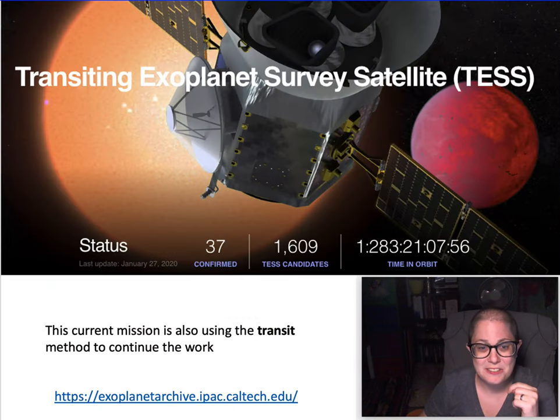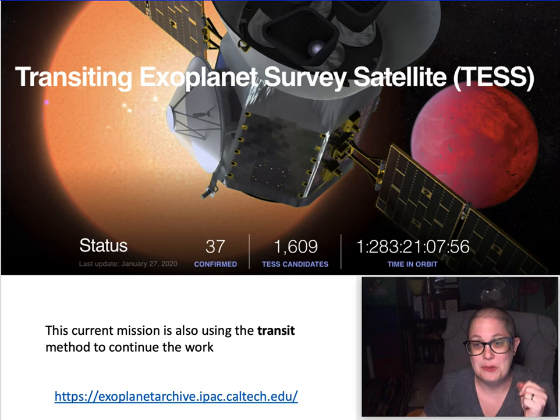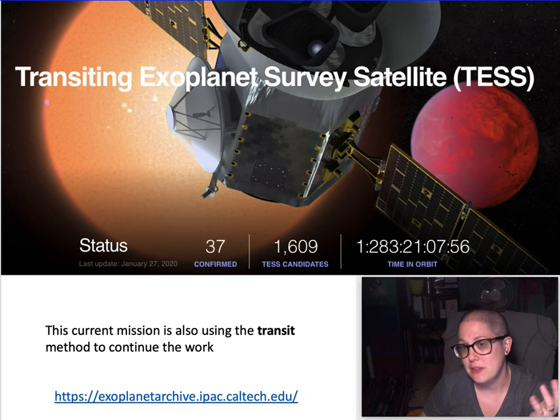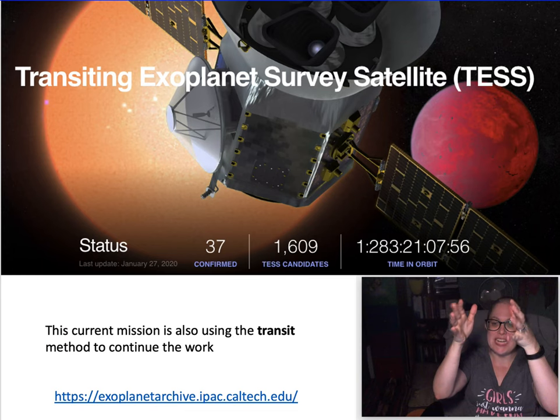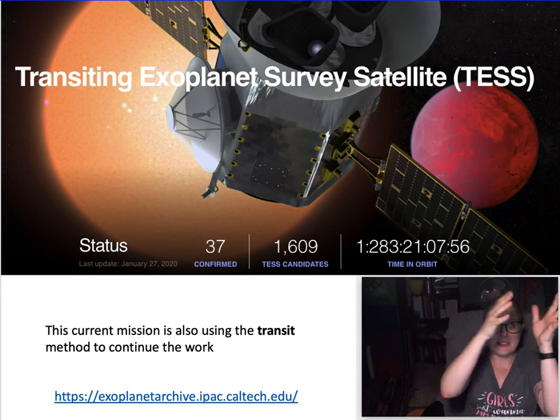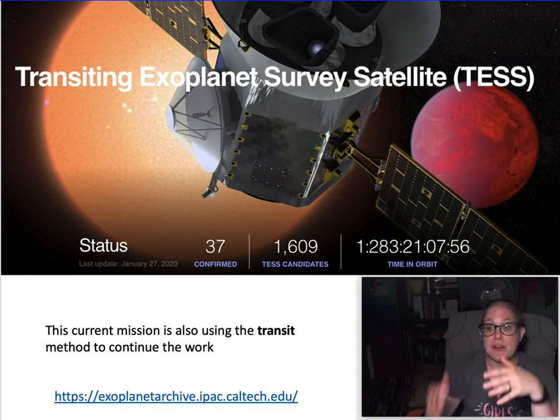The next generation of that mission that is in orbit right now is called TESS, the Transiting Exoplanet Survey Satellite. It's also using the transit method, it's in the name, but instead of staring at one piece of sky for several years looking for these dips, it's actually surveying the whole sky.